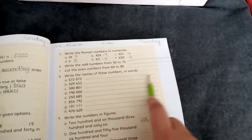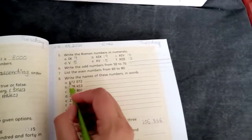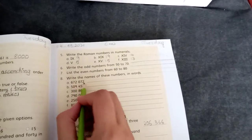Question number 8, words, sorry, numbers, words, spellings. 672,000 and 72.